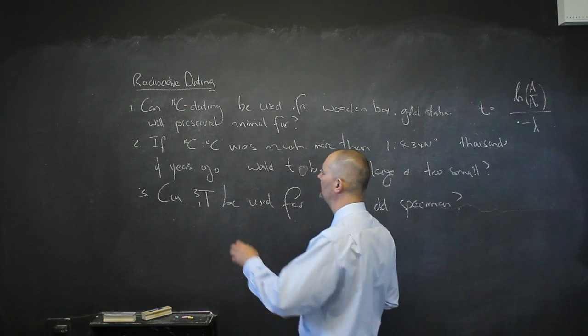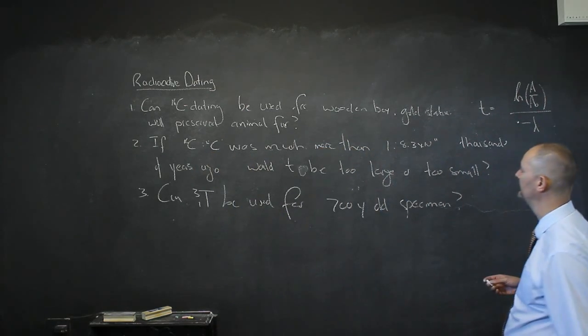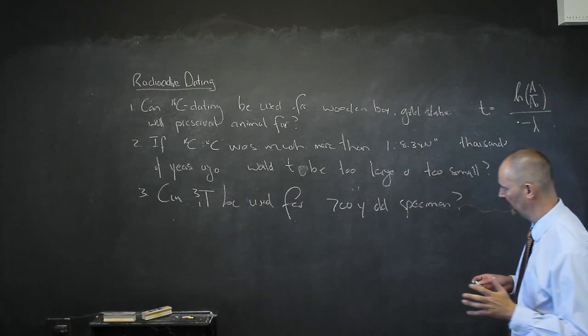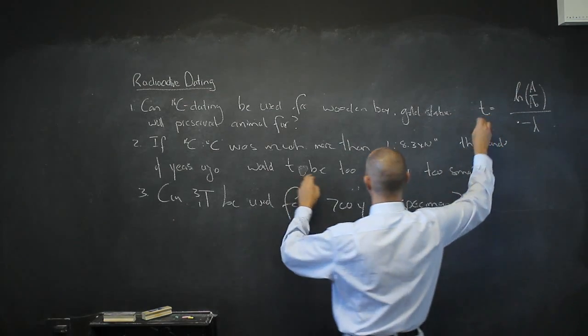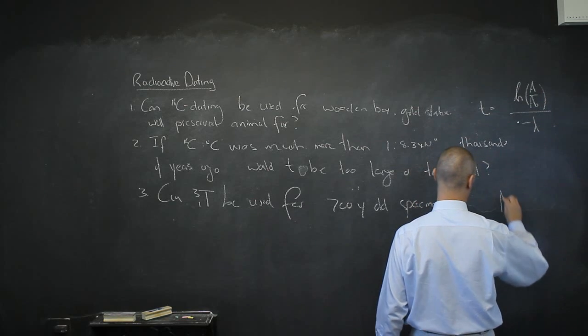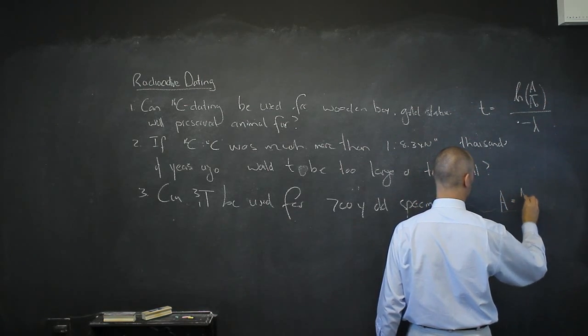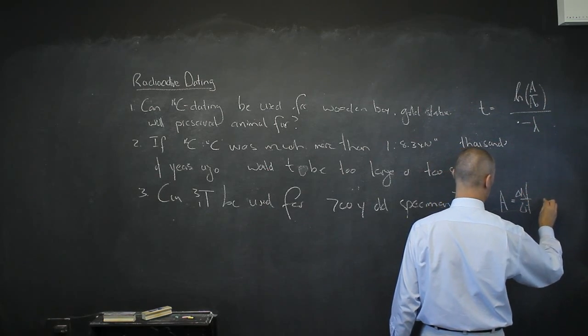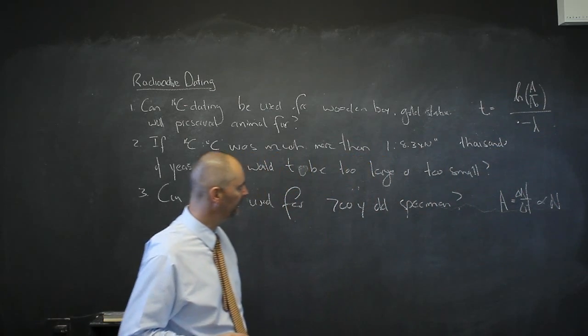If the carbon-14 to carbon-12 ratio was much more than the 1 to 8.3 times 10^11 thousands of years ago, would our estimation of t be too small or too large? Remember we said activity was delta n divided by delta t, and that was proportional to n, the number I have.